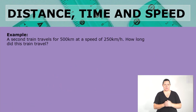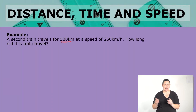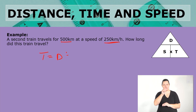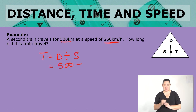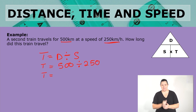Let's look at a second example. A second train travels for 500 kilometers at a speed of 250 kilometers per hour. How long did this train travel? It's a second train, the same distance, but now the speed is different — the speed has increased. Do you remember the formula for time? It is distance divided by speed. That distance is still 500, divided now by 250 kilometers per hour. 500 divided by 250 gives us an answer of two hours.